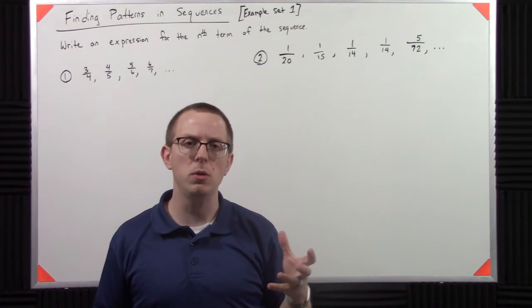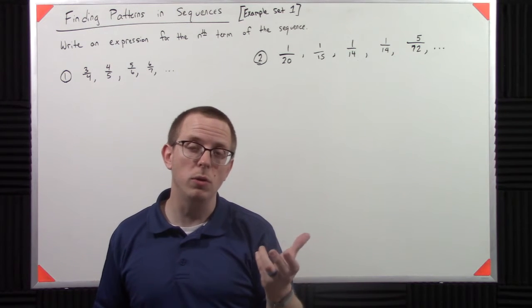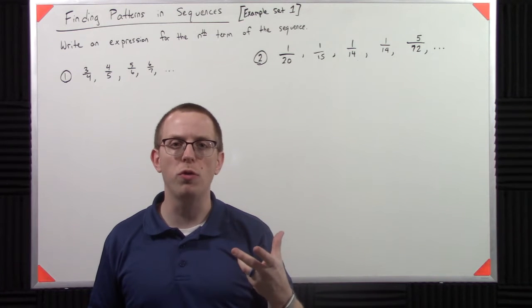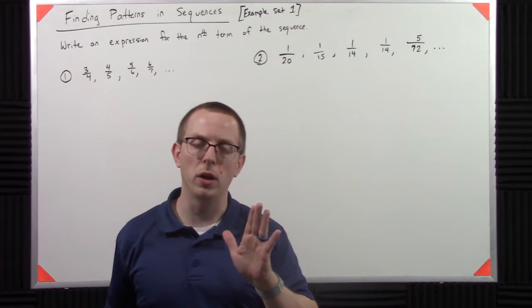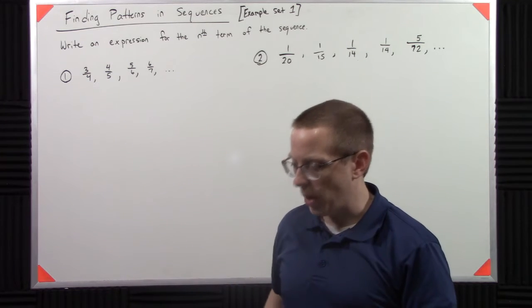So being able to take a sequence, especially when it's just given as numbers and not even given recursively, and transform that into this idea of a closed form is super important, like unbelievably important. So let's kind of walk through how we might do that.